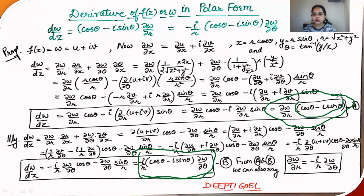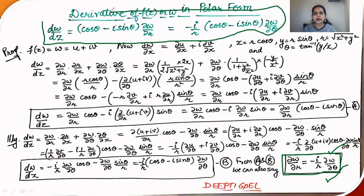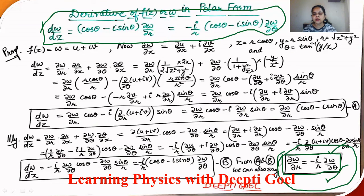Comparing the two expressions, we see that (cosθ - i sinθ) is common in both. From this we can establish the relationship ∂w/∂r = (-i/r)∂w/∂θ. That is, the partial derivative of w with respect to r equals (-i/r) times the partial derivative of w with respect to θ. Using these equations we can very easily solve numerical problems in complex variables. Thank you.